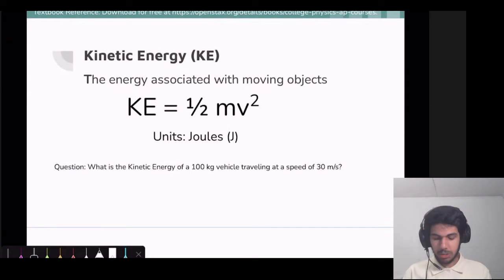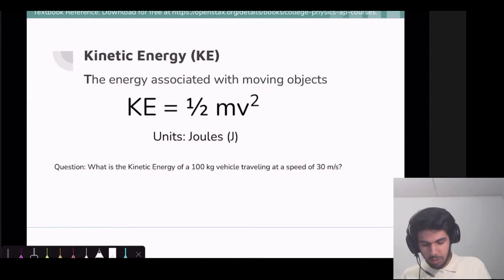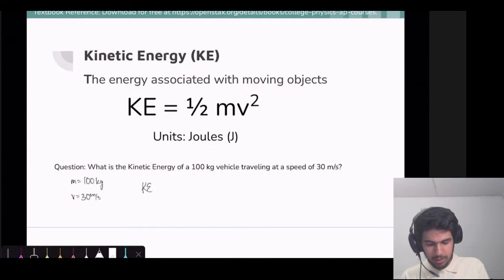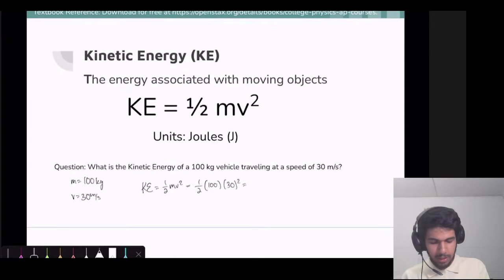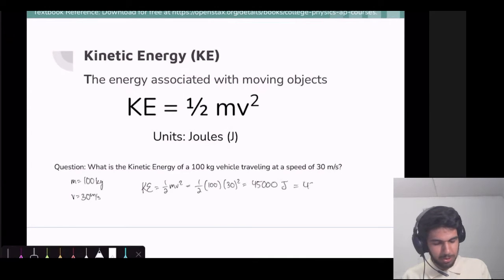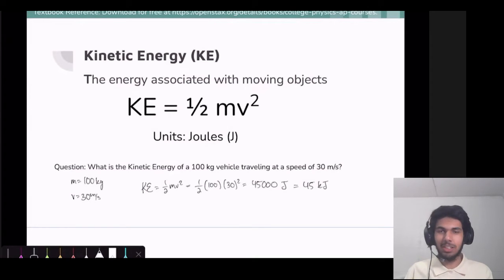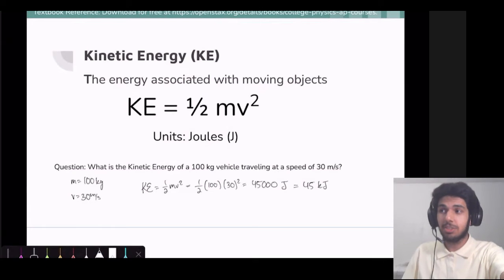We have a little question here: What's the kinetic energy of a 100-kilogram vehicle traveling at a speed of 30 meters per second? We're given mass equals 100 kilograms and velocity equals 30 meters per second. So we use KE equals one-half mv squared: that's one-half times 100 times 30 squared, which equals 45,000 joules, or 45 kilojoules. That's just a pretty simple plug-and-chug problem to get us introduced to kinetic energy.